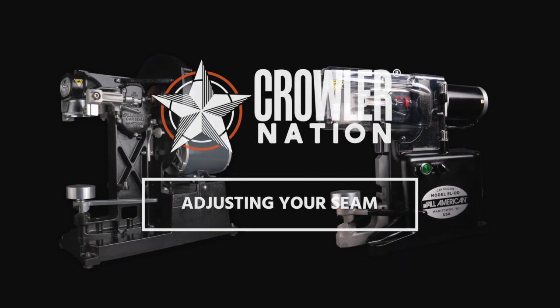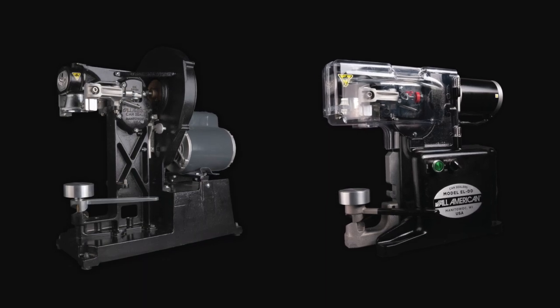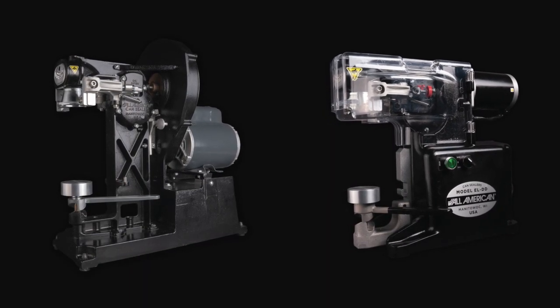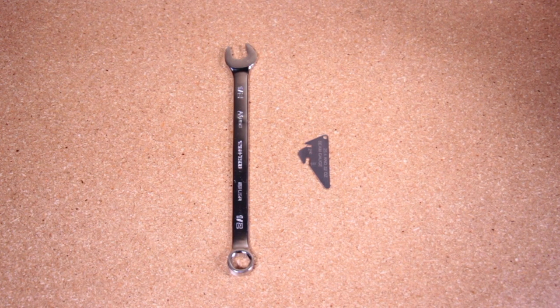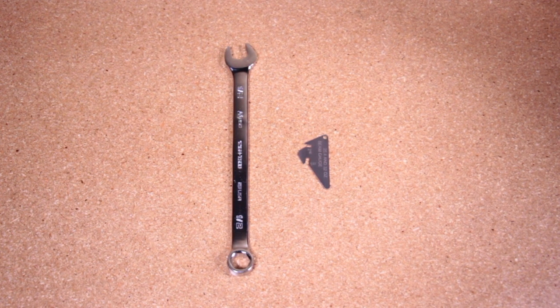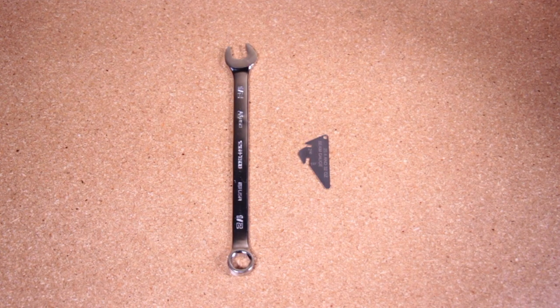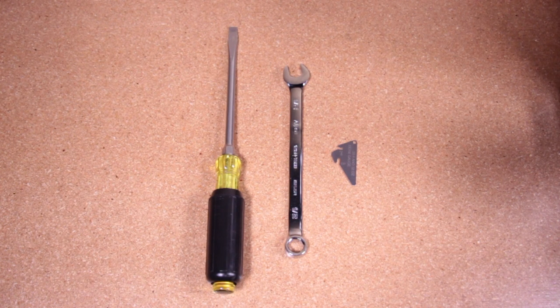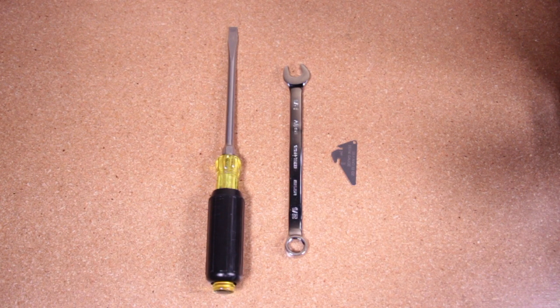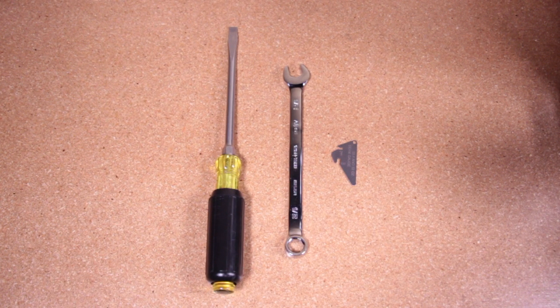If you are experiencing a leaky crawler or just want to check your seams, this video will show you how to step by step. If you have a Platinum Pro direct drive, you will need a half inch wrench and a seam gauge. If you have a gold standard 8000 D, you will need a half inch wrench, a seam gauge, and a standard flathead screwdriver.